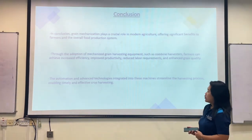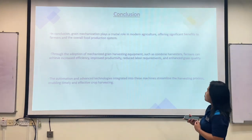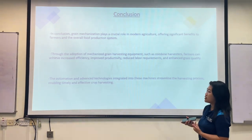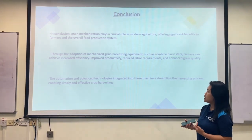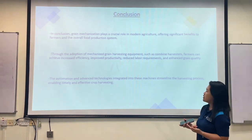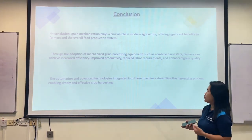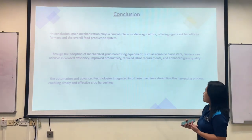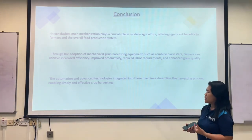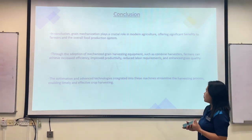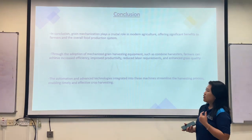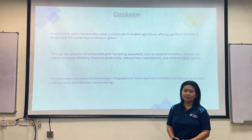In conclusion, grain mechanization plays a crucial role in modern agriculture, offering significant benefits to farmers and the overall food production system. Through the adoption of mechanized grain harvesting equipment such as combine harvesters, farmers can achieve increased efficiency, improved productivity, reduced labour requirements, and enhanced grain quality. The automation and advanced technologies integrated into these machines streamline the harvesting process, enabling timely and effective crop harvesting. Thank you.